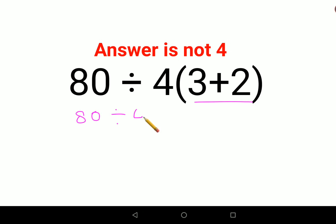So this looks like 80 divided by 4 into bracket, right? So there is no sign between 4 and bracket, so it's supposed to be multiplication. And 3 plus 2 comes out to be 5.